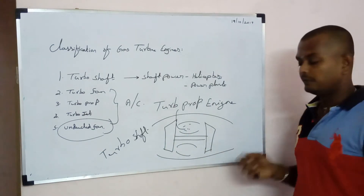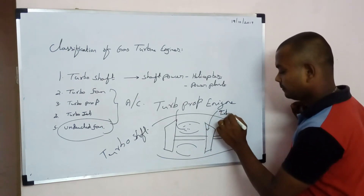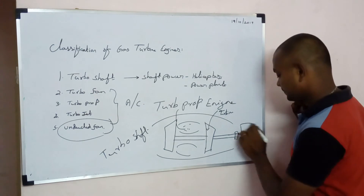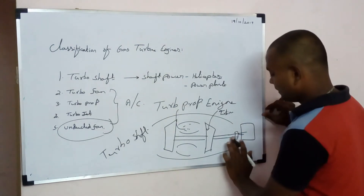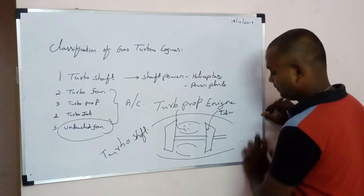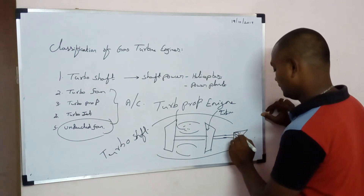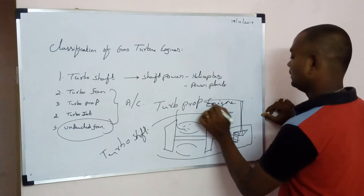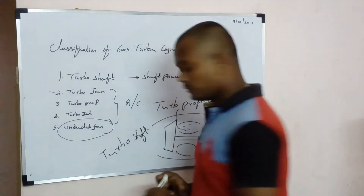The turbo shaft engine gives shaft power — you connect the shaft from the turbine to some powering device, for example a generator. For helicopters, this setup goes through a gearbox in between, and that shaft power is used to drive the helicopter rotor blades. Next, you can look at the turbo prop — not much modification from turbo shaft.